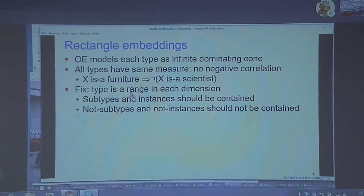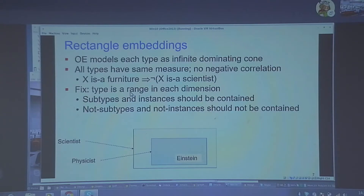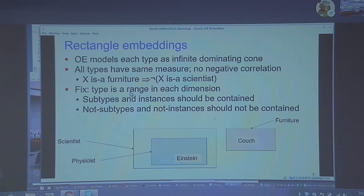Subtypes and instances should be contained. For example, Einstein should be contained in physicist, which should be contained in scientist. Einstein is a point, physicist is a small rectangle, scientist is a larger rectangle — all in d-dimensional space where d could be 50 or 100. Non-subtypes and non-instances should not be contained, so couch and furniture should become disjoint. This is the sharp difference between the earlier formulation and this one. Mathematically it doesn't cost much — it's basically just another set of cones — but you have to design and tweak the loss function to do the right thing. All we are doing is learning to lay out rectangular Venn diagrams properly given a few examples.